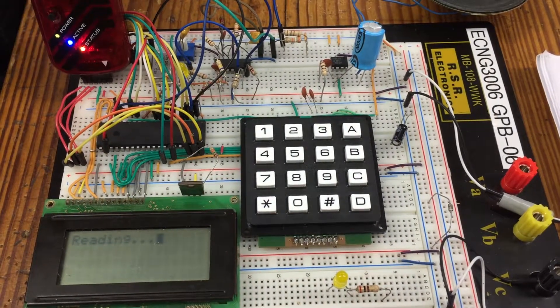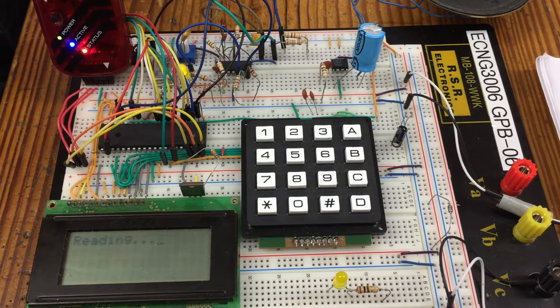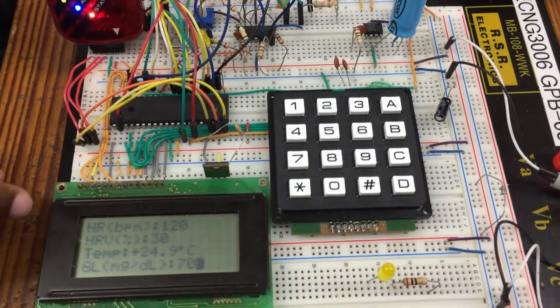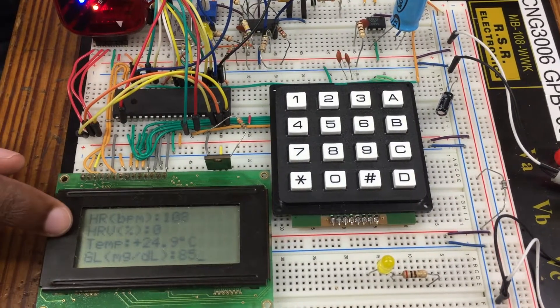So then it'll show that it's reading values. So you can see these are the current values actually measured. So the heart rate was 120, the HRV,